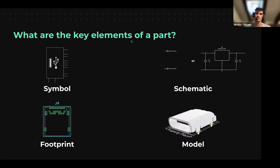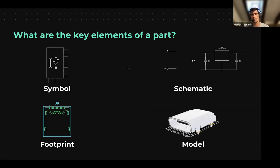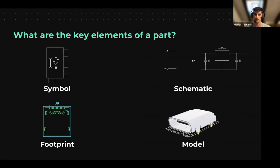Inside the schematic, it can just be terminals and a footprint, or it can actually be a sum of parts — for example, the USB connector plus a voltage regulator plus a bunch of decoupling caps. The symbol is potentially the same. And then the footprint, which is the physical representation of that part, and a model, which is the 3D representation of the footprint.